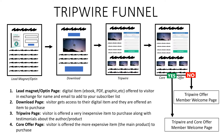The visitor sees something from you that's very inexpensive — that's why it's called the tripwire. It's very inexpensive: $2.95, $3.95, $4.95 — something that makes them pull out that credit card really fast and they want to buy it because it's very inexpensive. That's what the tripwire offer is.